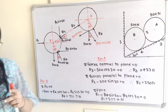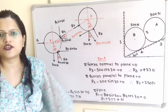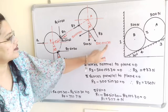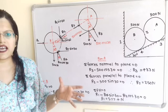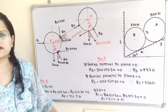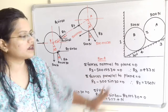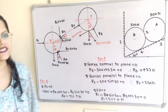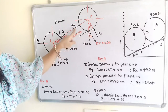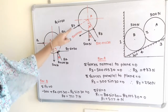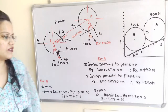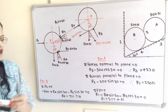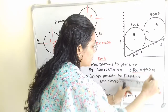For cylinder A, taking summation of forces normal to the inclined plane equal to zero: R3 and the component 500 cos 30 act in opposite directions, so R3 minus 500 cos 30 equals 0, giving R3 equal to 433 Newton. Taking summation of forces parallel to the inclined plane equal to zero: R2 minus 500 sin 30 equals 0, giving R2 equal to 250 Newton.